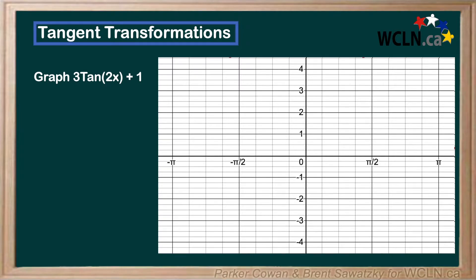Splitting this up into parts, let's find the period first. As we now know, period is equal to pi over n. Since our coefficient is 2, we get a period of pi over 2. So what does this mean for our graph? If we remember the graph of tan, we had asymptotes every pi over 2 along the x-axis. So if our period is shrunk by 2, we now have asymptotes at pi over 4, with the graph repeating every pi over 2.